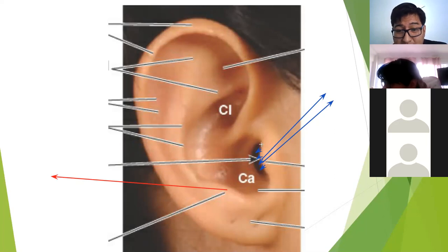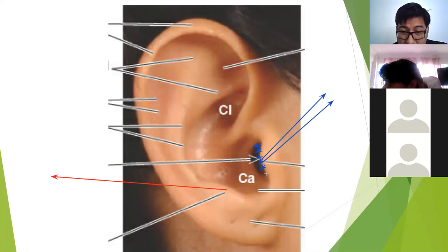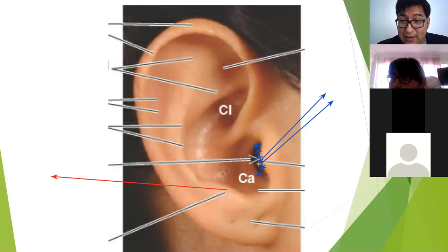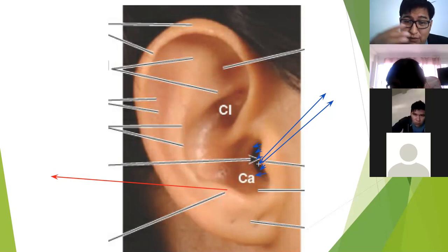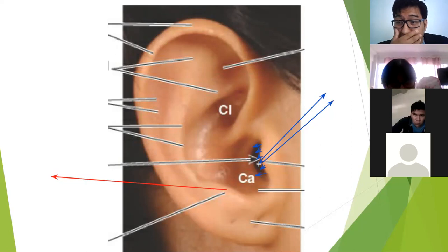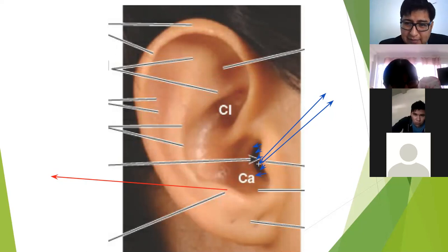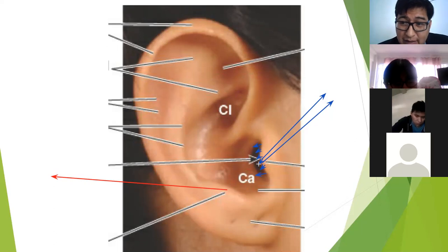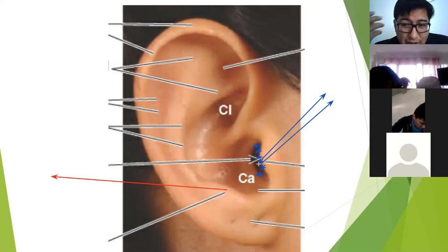Hablamos de las características de los individuos: vamos evolucionando. Antes había más individuos con más barba, más pelo en el pecho, en la nariz y en los oídos.